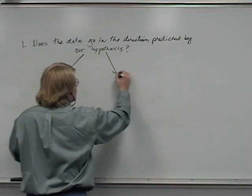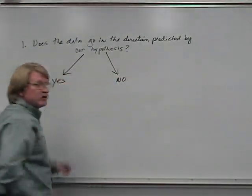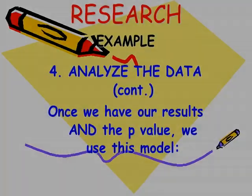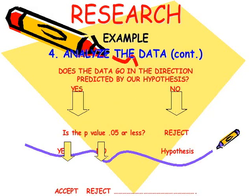What would we do if the answer was no? The data did not go in the direction we predicted. Well, then we'd have to reject our hypothesis.